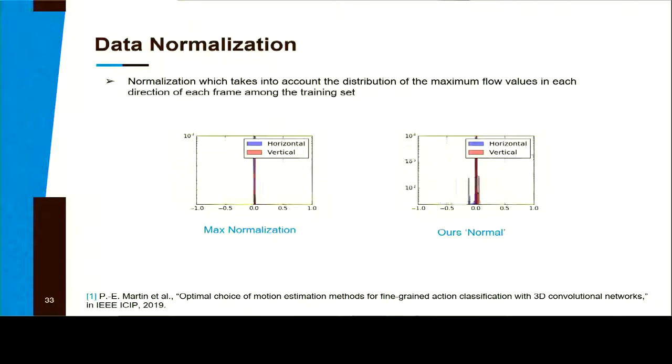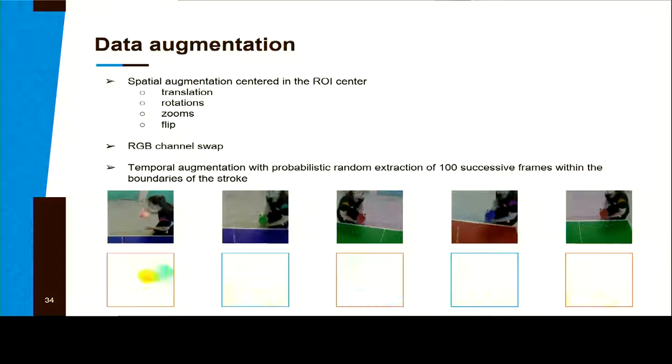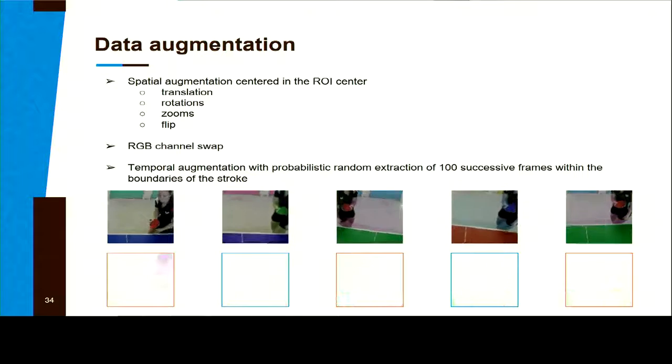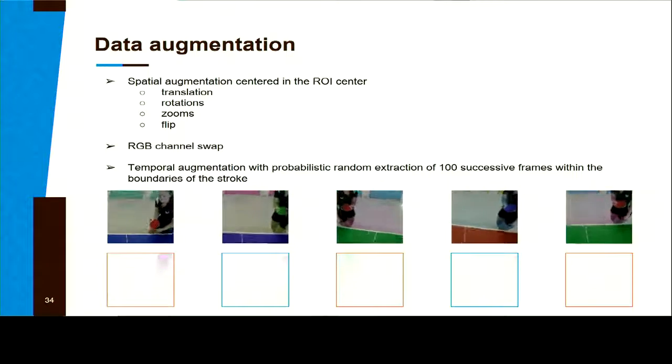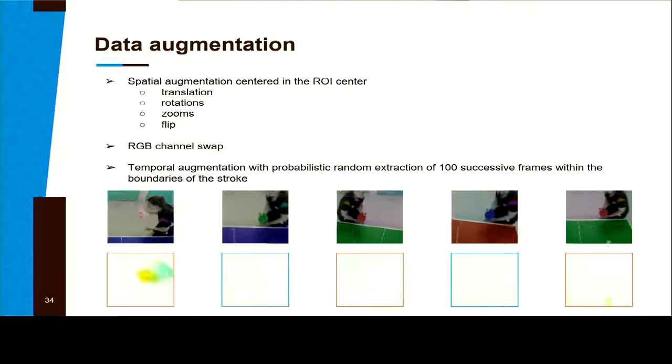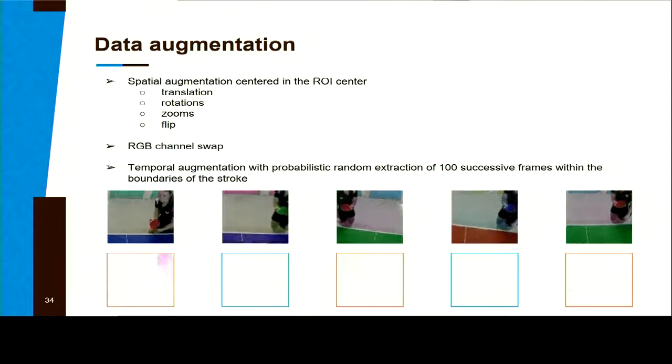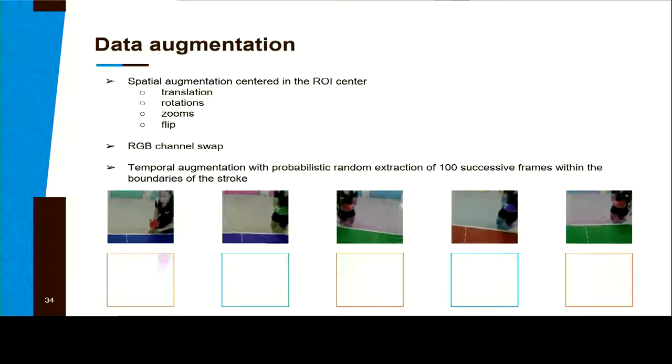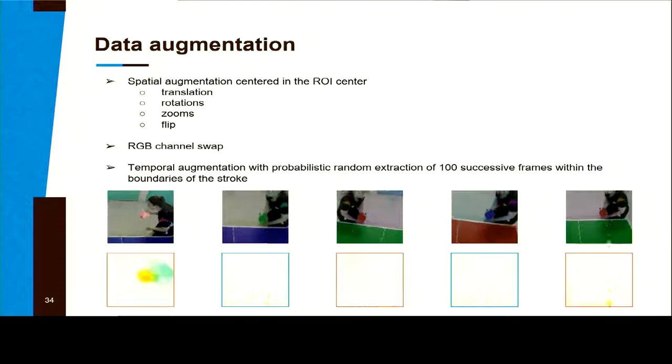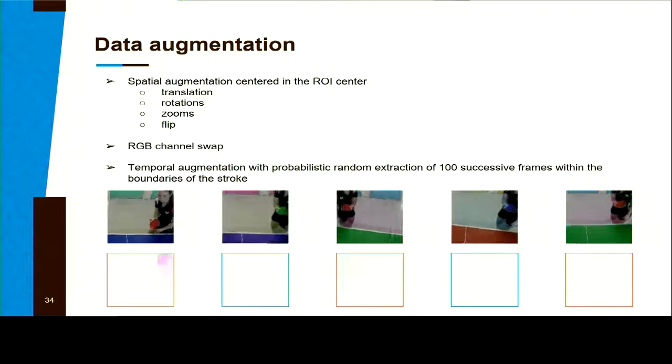Also, to avoid overfitting, we use data augmentation. We do spatial augmentation which is centered in the region of interest, using translation, rotation, zooms, flip. We also use RGB channel swap.